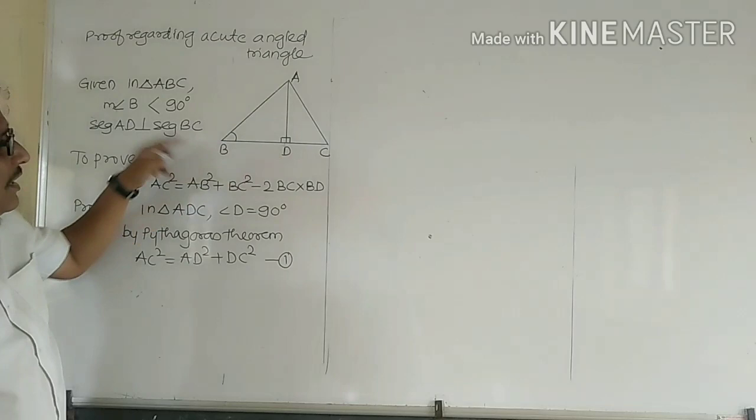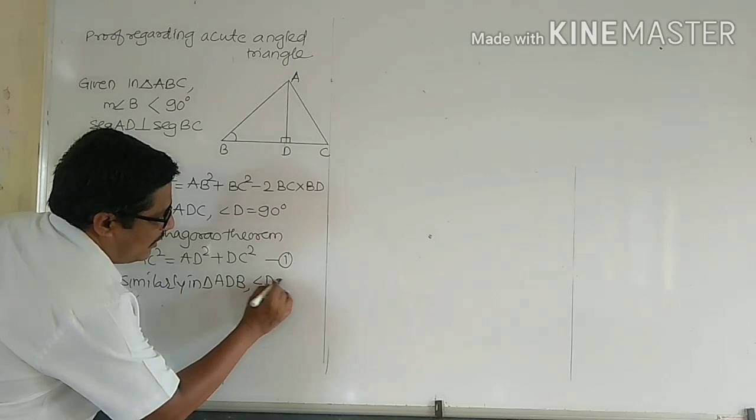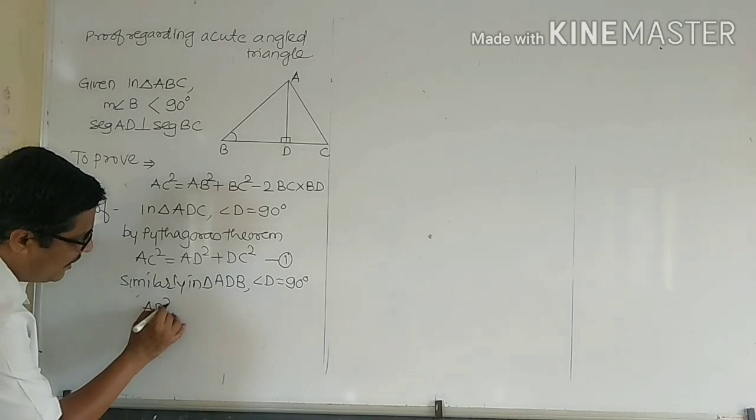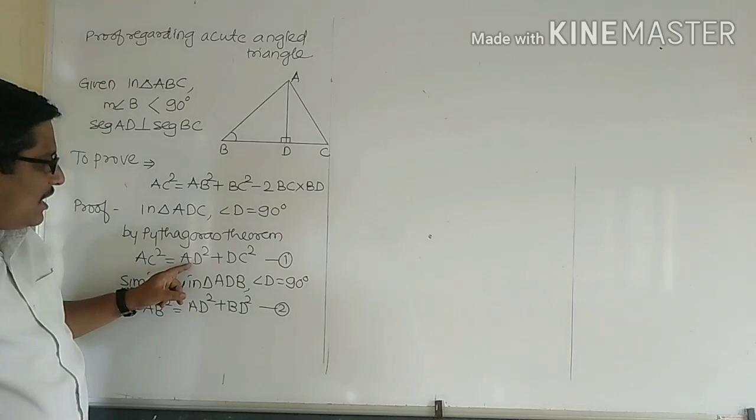Now, in the same way, here we have another right angle triangle, that is triangle ADB. Similarly, in triangle ADB, angle D is equal to 90 degrees. Therefore, AB² = AD² + BD². This is step number 2.